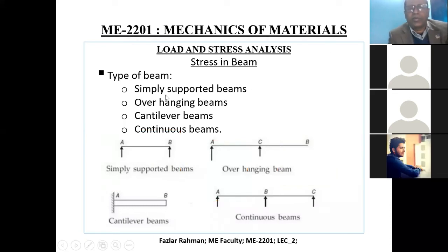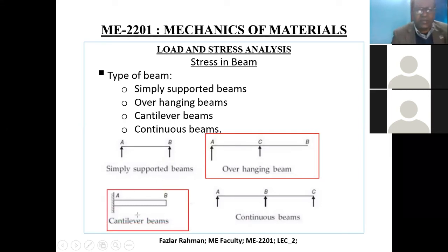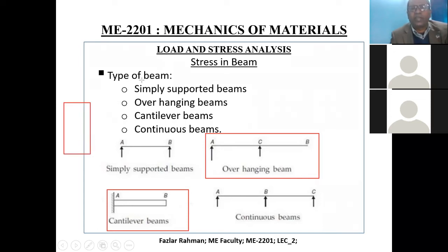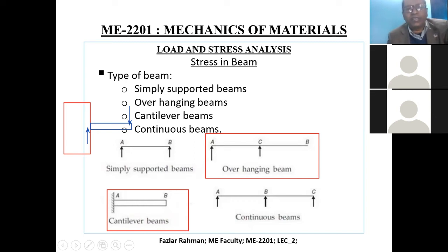Types of beams: number one, simply supported — this beam has support only at two ends, A and B. The overhanging beam has a portion extending beyond the support. The cantilever beam has only one end support — like your balcony, where your weight acts downward at the free end and the reaction is at the fixed end. The continuous beam has more than two supports, like a long river bridge with multiple pillars.